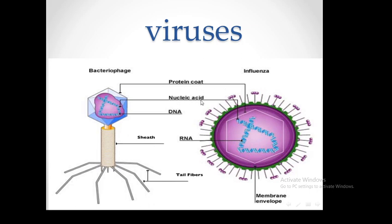The other two structures that a virus could have are: envelopes — the envelope consists of lipids and is found only in some viruses, and it's believed to come from the host cell — and the tail. Viruses that infect bacteria have a tail, which is used for attachment.